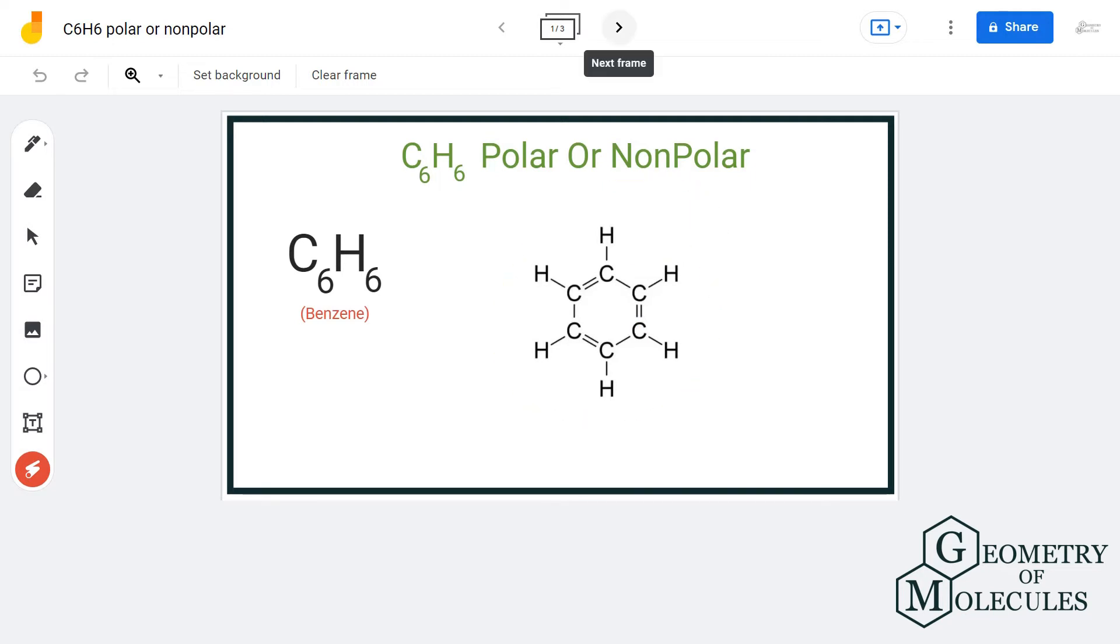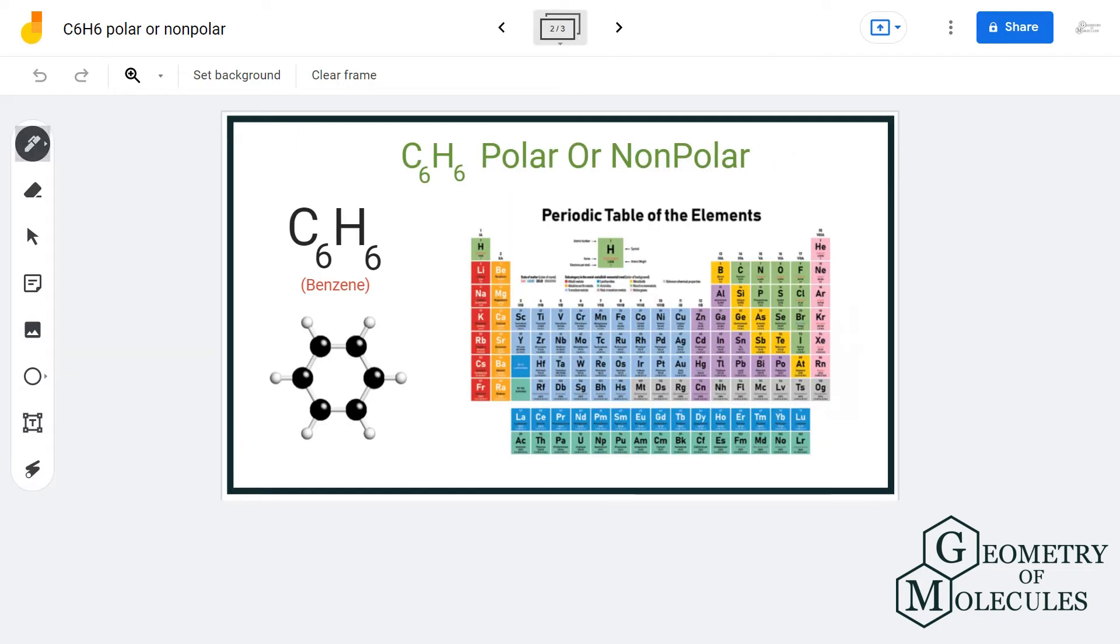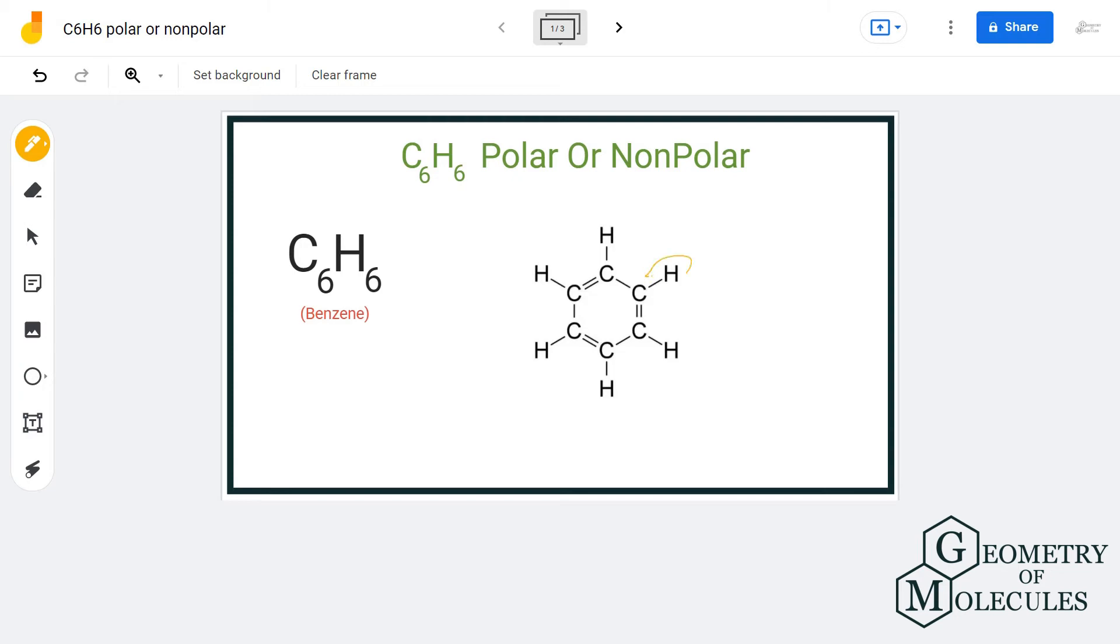If you look at the electronegativity values for carbon and hydrogen, for carbon it is 2.55 and for hydrogen it is 2.20. If you calculate the difference, it will be 0.35, so these bonds between carbon and hydrogen are not completely polar - they are only slightly polar.